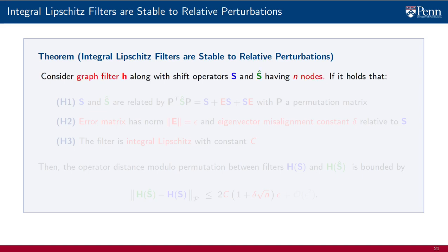To do so, consider a filter H along with two graphs with n nodes and shift operators S and S-hat, such that the following three hypotheses hold. First, shift S and S-hat are related by a relative perturbation model. The filter S is perturbed by the addition of the symmetric relative error term E times S plus S times E. This perturbation is modulo permutation.